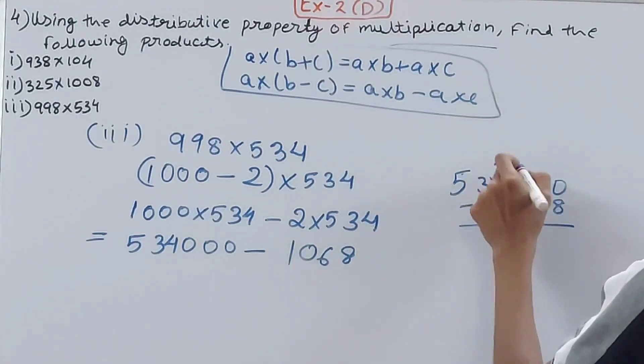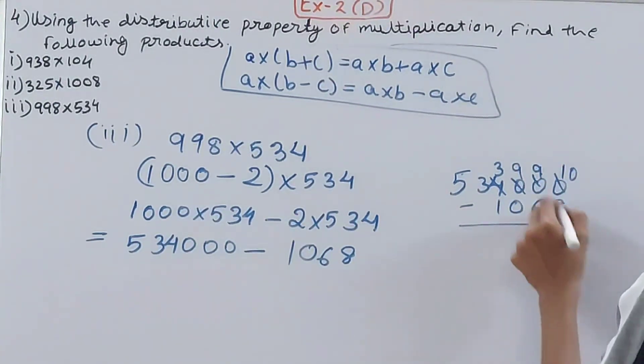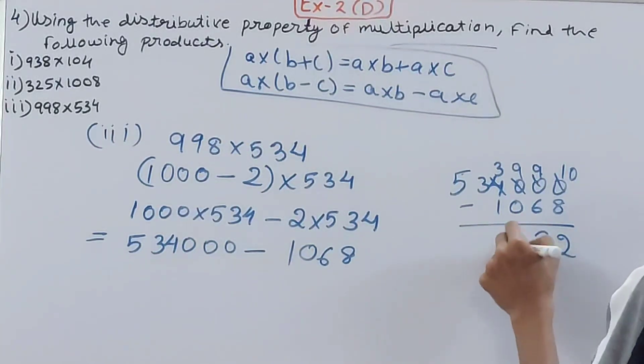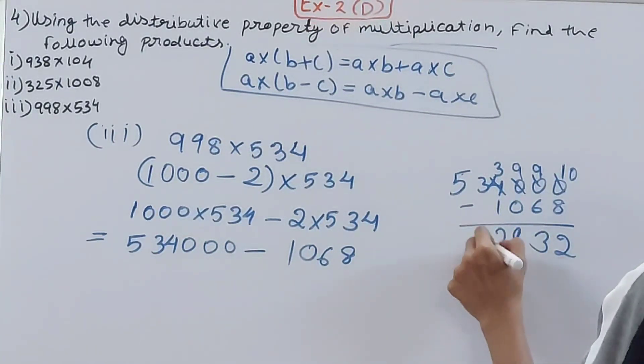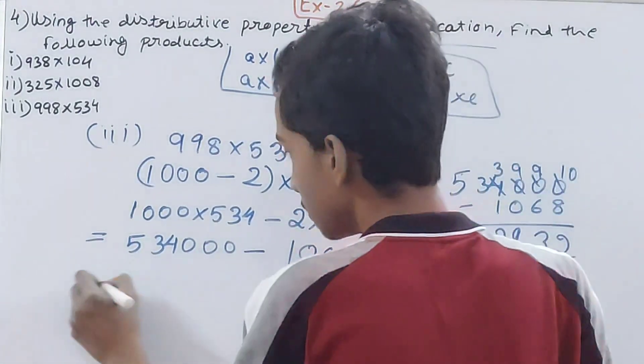Let's subtract: 534,000 minus 1,068 equals 532,932.